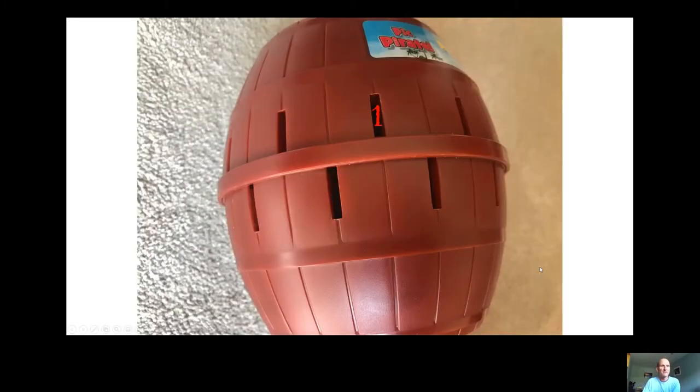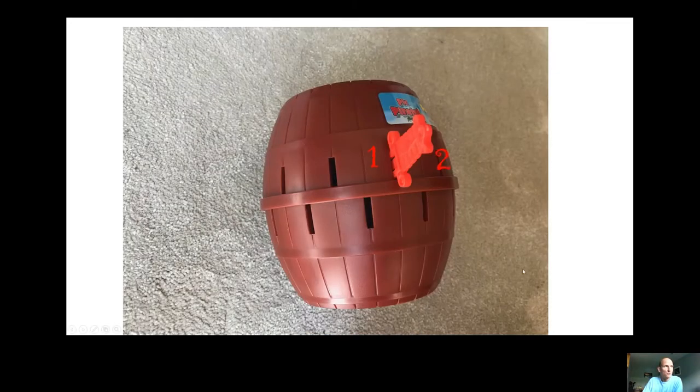So how did I use maths to win at Pop-Up Pirate? Well, firstly, I gave each hole a number from 1 to 24. Handily the toy has a label, but I aligned hole 1 to the left-hand edge of the label and on the top row. Here's a red sword in hole 1 to illustrate the point. Then hole 2 is next along clockwise, hole 3 comes next, and so on until we go all the way around and get to holes 11 and 12 on the top row.